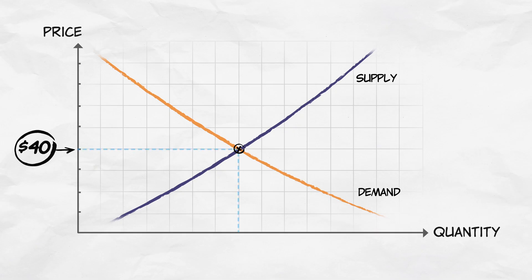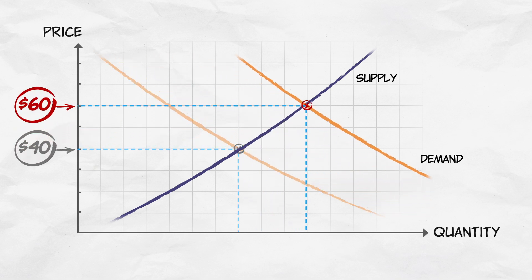Let's use the economic concept of the elasticity of supply to help understand this better. The problem is this: the people trying to free the slaves — we'll call them the slave redeemers — are also creating additional demand for slaves. After all, they're buying slaves in the market. That additional demand shifts out the demand curve for slaves and leads to a new and higher market price.